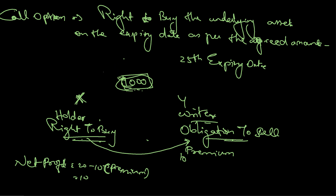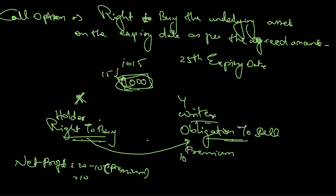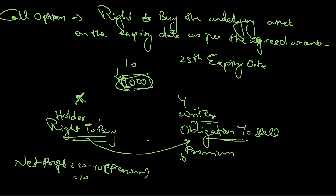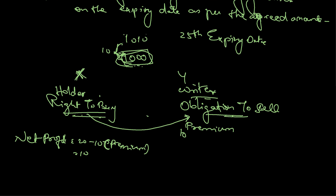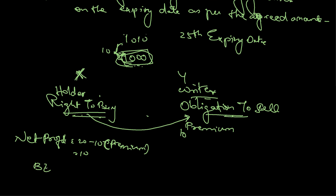If the price goes to 1015, the gross profit is 15 minus 10 premium, giving a net profit of 5. If the price goes to 1010, he makes 10 gross profit but paid 10 as premium — so no profit, no loss. This is the break-even point.